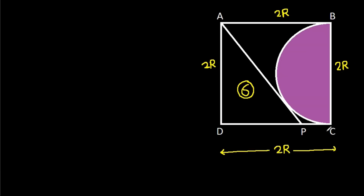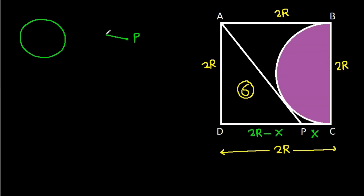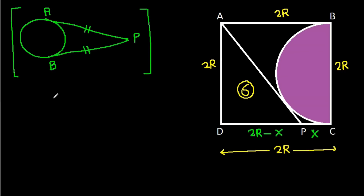Now, suppose CP is X. Then DP will be 2R minus X. And in any circle, from any point P, if we make two tangents to this circle — suppose this point is A and this point is B — then PA will be equal to PB. Suppose this point is Q, then from point P, PC will be equal to PQ. And PC is X, so PQ will be X.